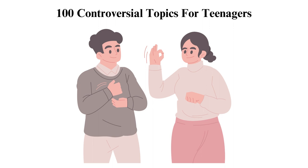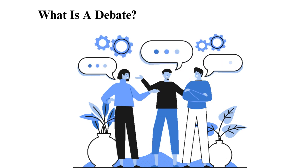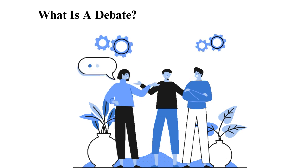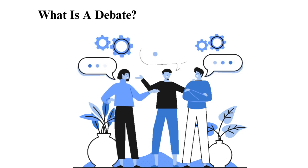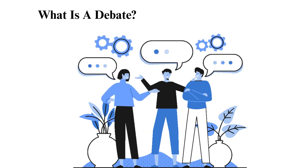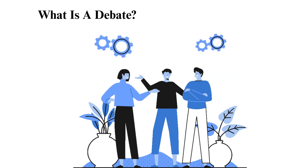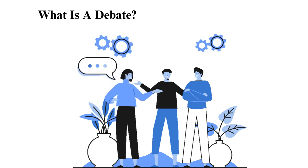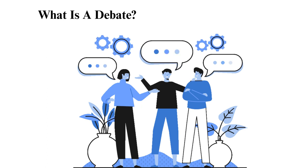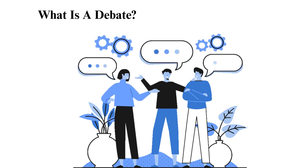100 Controversial Topics for Teenagers. A debate refers to a formal discussion where two opposing sides present their viewpoints for an audience to consider. It can revolve around different topics ranging from politics to culture and economics, and aims to help establish a specific truth. Participants often look into controversial topics and then present a viewpoint in support of or against it.